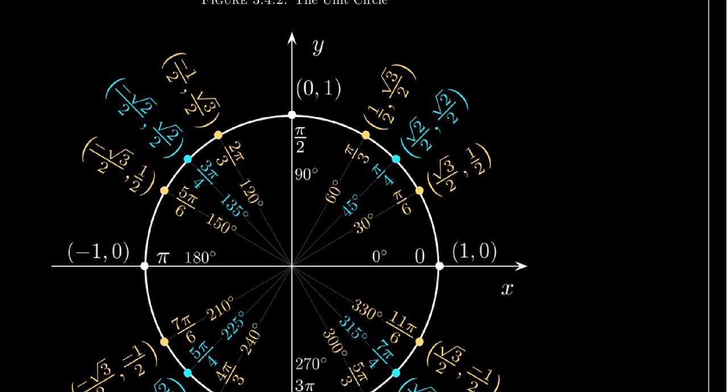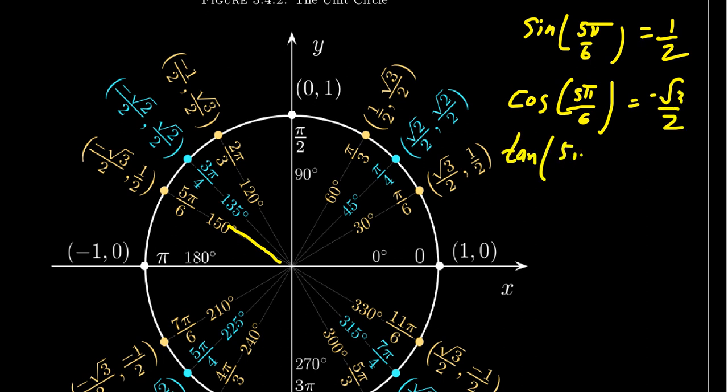But what I want to do for the moment is just show you how you can use this to make a calculation. So let's say we wanted to do something like, let's do sine of 5 pi over 6. What does that mean? When you look it up on the diagram, 5 pi over 6 is right here. The y-coordinate is one half. Great. How do you do cosine of 5 pi over 6? Again, you just look it up here. It's going to be a negative root 3 over 2.